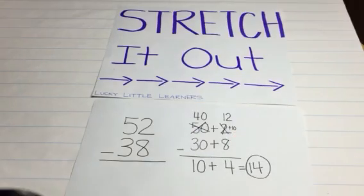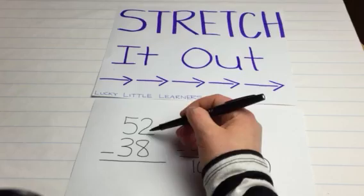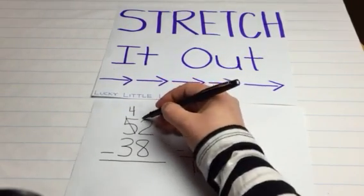So just to check over here to make sure that makes sense. Can we, bigger bottom, better borrow? 5 tens, we're going to borrow a ten from there, becomes 4 tens.